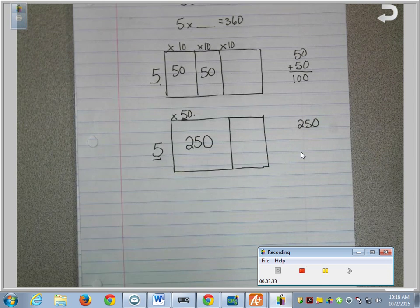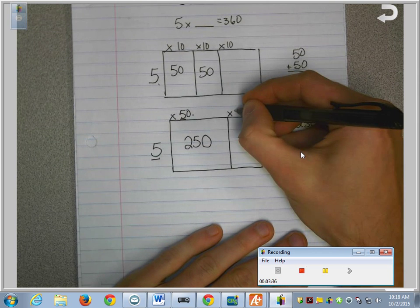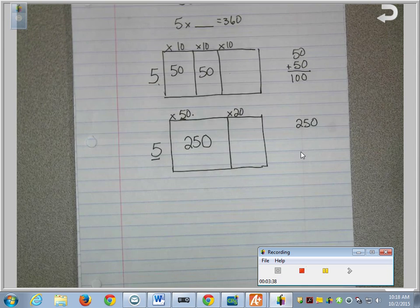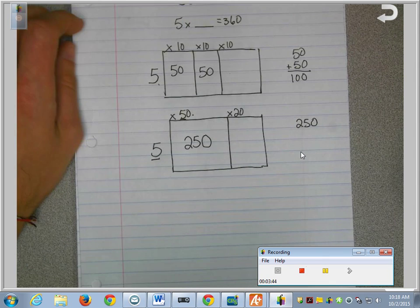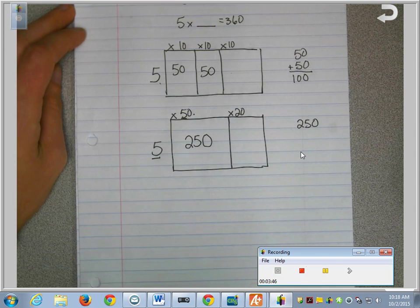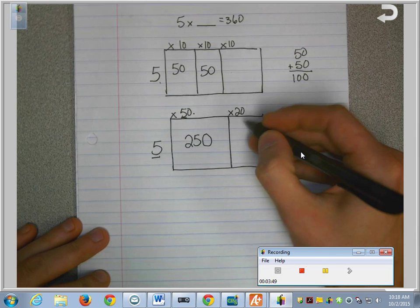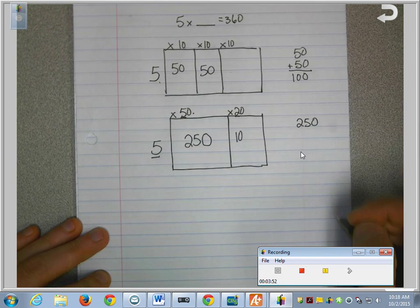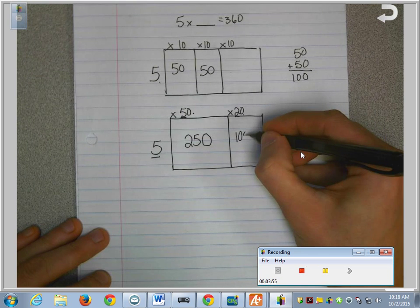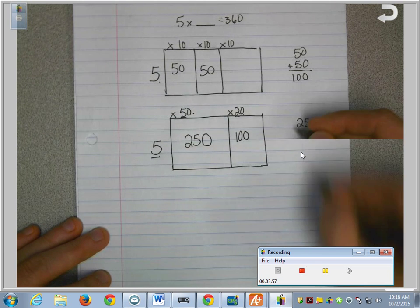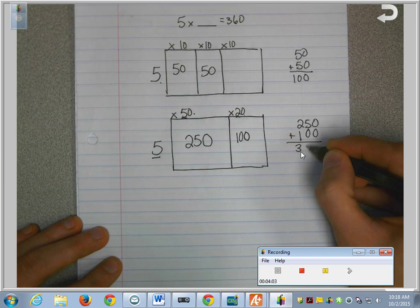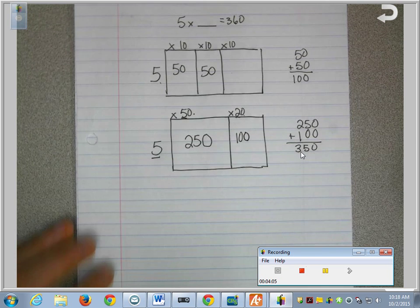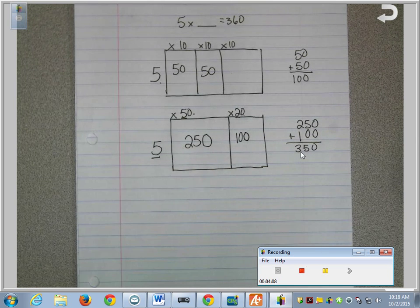Next, I should maybe multiply 5 times 20. And if it so happens that you multiply by a number and it turns out you go too far, like we go over 360, we can always go back a step. We can erase it and do a smaller number. I know in my head that 5 times 2 is 10. And there's one zero in 20, so I add a zero to my answer. And now, since I'm keeping track on the side over here, I'm going to add another 100 and I'm up to 350. How far away from my goal am I? I'm trying to get to 360 and I'm up to 350, so we're 10 away.